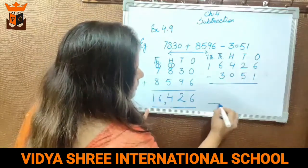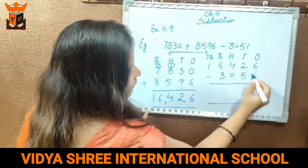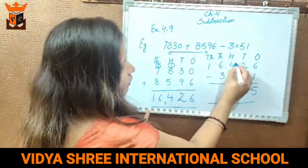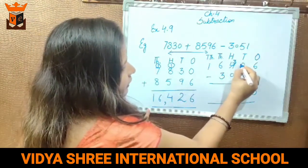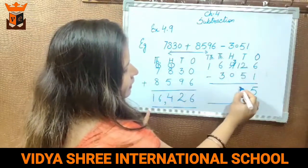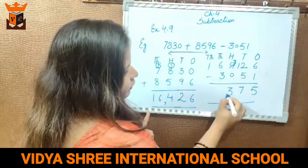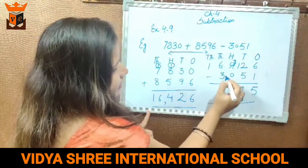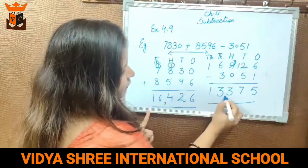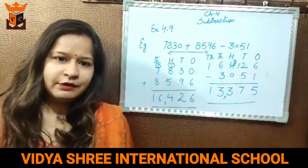Now subtract. 6 mein se 1 gaya — it's 5. 2 mein se 5 — it is not possible, so take 1 carry from here; it becomes 12. 12 mein se 5 gaya — 7. 3 mein se 0 gaya — 3. 6 mein se 3 less gaya — 3, and 1 carried — 1. Answer is 13,375.